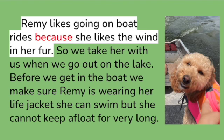How would I go about fixing that? I would actually combine my first two sentences. Since my first sentence was a simple sentence, I know I can combine it with this dependent clause. The simple sentence can now support the dependent clause. I combine them together to create a complex sentence — one independent clause and one dependent clause: 'Remy likes going on boat rides because she likes the wind in her fur.' Now this can stand on its own as a complete sentence. Note that because I don't start with an AWEBBIS word, I don't need a comma.